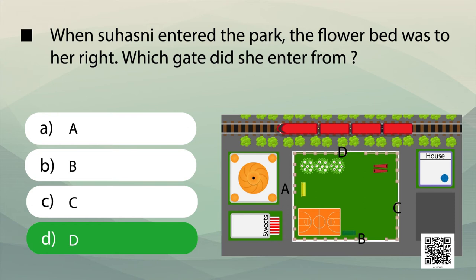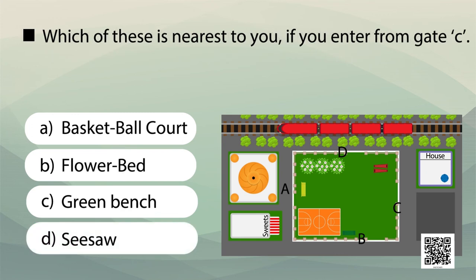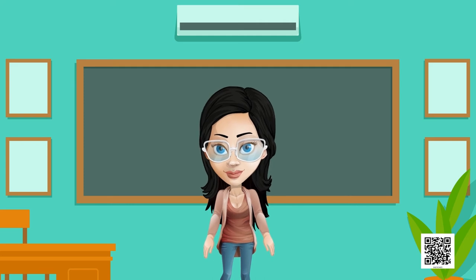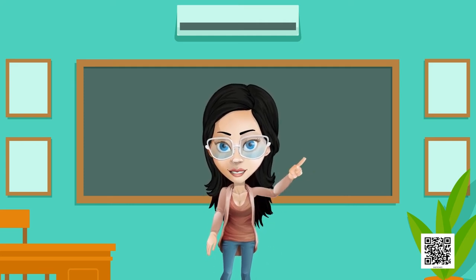One last question looking at the same picture: which of these is nearest to you if you enter from gate C? Will it be the basketball court, the flower bed, the green bench, or the seesaw? Imagine yourself entering from gate C. The correct answer is the seesaw. I hope you have understood how to answer questions by looking at pictures.